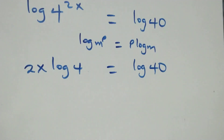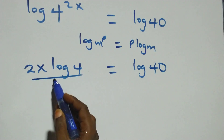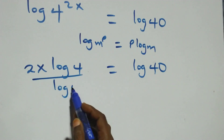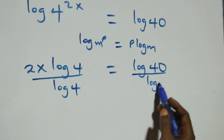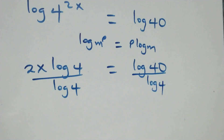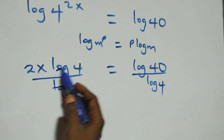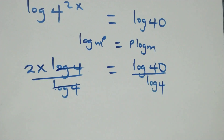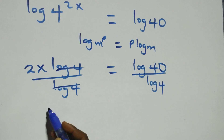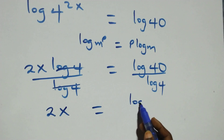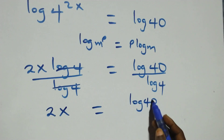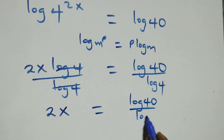Then the next step: divide both sides by log 4. That is, divide this side by log 4, and also divide this side by log 4. Which implies log 4 cancels each other, and we have 2x equals log 40 over log 4.